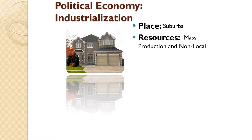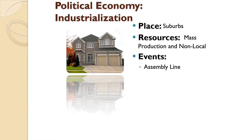Industrialization is about mass production — producing more than you can sell locally. This mass production was done in a central location, which required factory workers who did not have to live in the factory. Towards the end of the 19th century and early 20th century came the invention of the assembly line. A lot of people think Henry Ford invented the car, but what he actually invented was a way to build the car, and that required specialization.